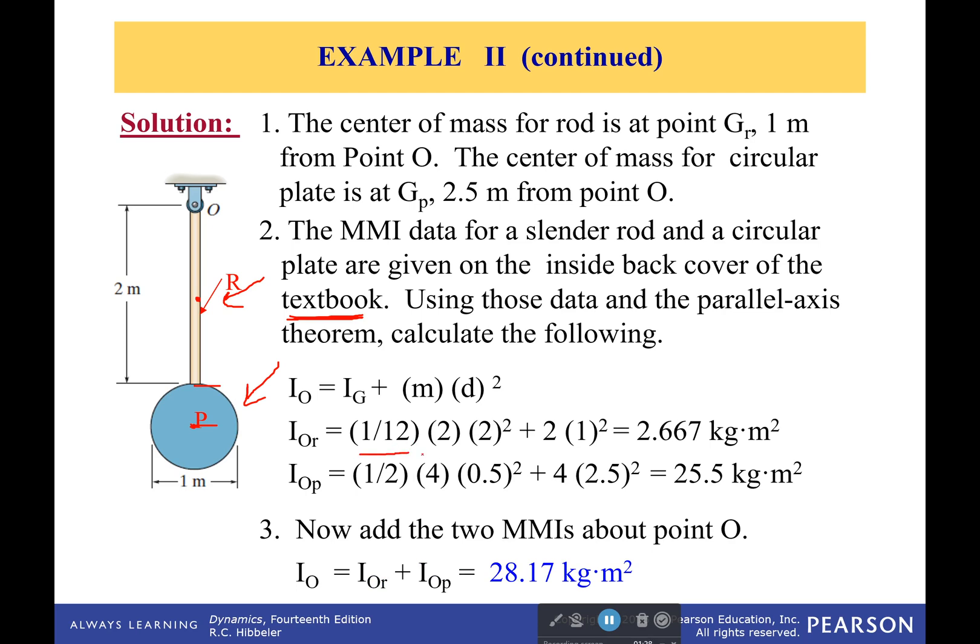What we have is for the rod, it's one twelfth times the mass times the length squared. For the circle, it's one half times the mass times the radius squared.